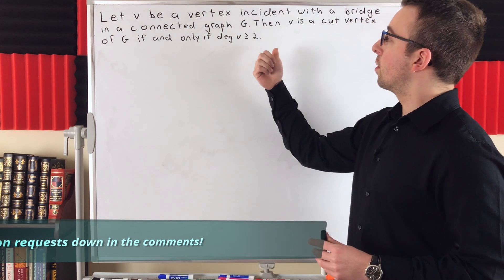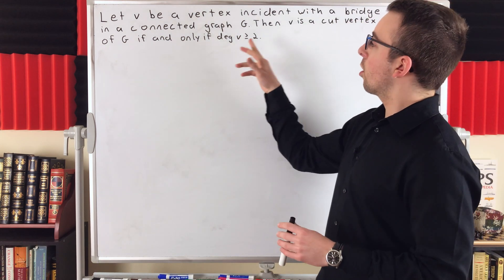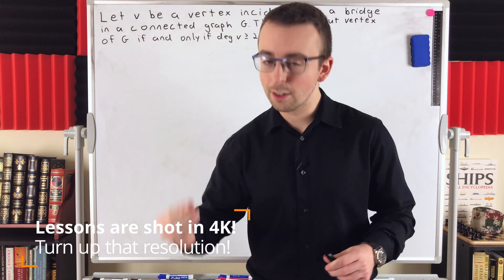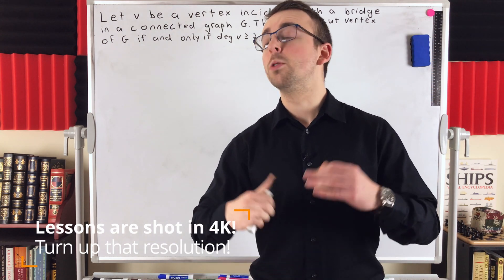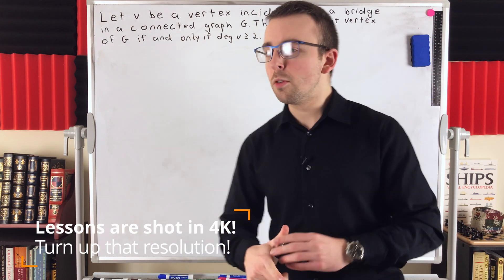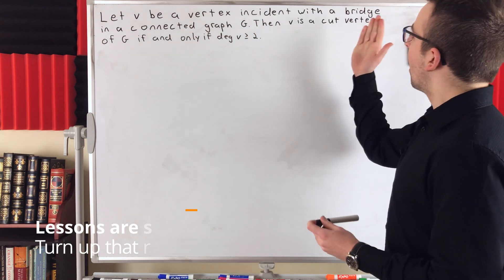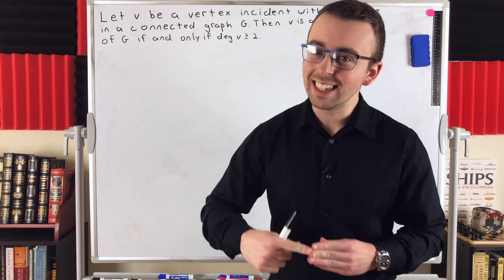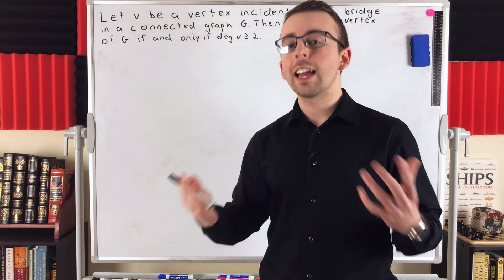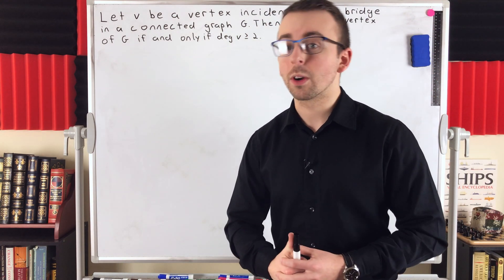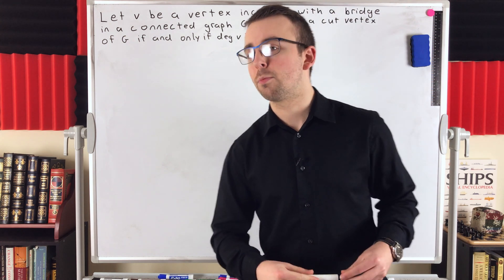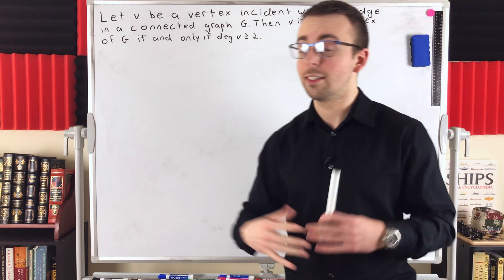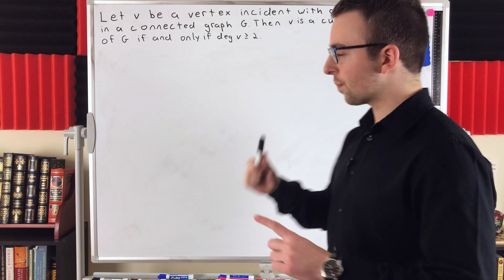If you need a recap of either of these terms — bridge or cut vertex — I'll leave links in the description to lessons I've done on the topics. A bridge of a graph is an edge that, if deleted, disconnects the graph or disconnects the component that edge belongs to. A cut vertex is the same thing, just with vertices.